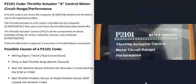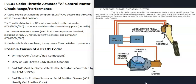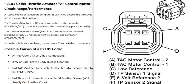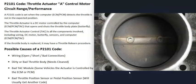A possible cause of a P2101 code is any kind of wiring problem inside the system. If there's a bad connection, an open, or a short, that's going to cause issues. You can check that the pins, wires, and connectors look properly plugged in going to the throttle body. You can also get a wiring diagram for your specific vehicle to verify you're getting the correct voltage, a good ground, and that there are no opens or shorts in the circuit.